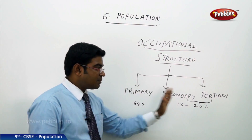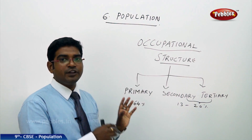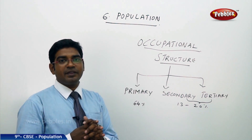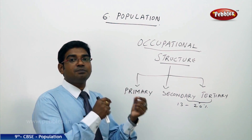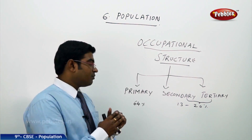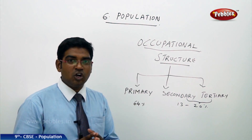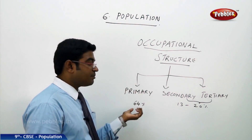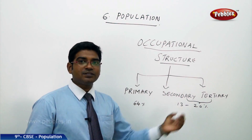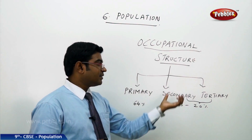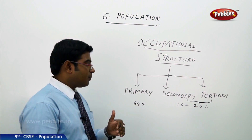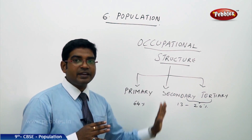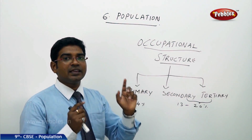The population is categorized based on their work into three major categories. Whether a country is called developed or developing depends on the percentage of people working in different sectors. India is a developing country because 64 percent of people work in the primary sector, while only 13 to 20 percent are engaged in the secondary and tertiary sectors. Any country where the maximum number of people work in secondary and tertiary sectors is called a developed nation.